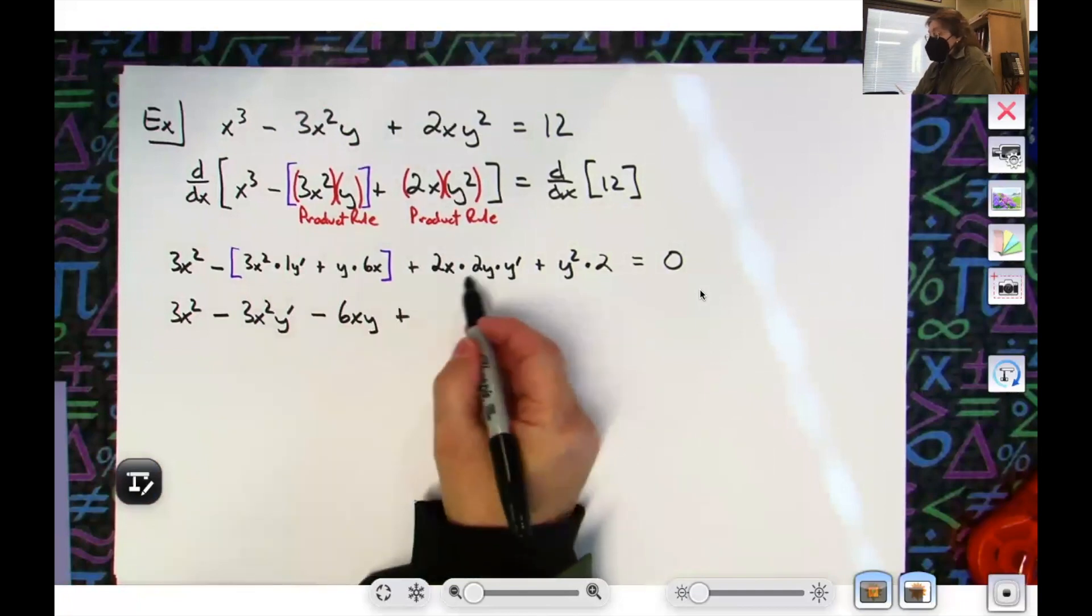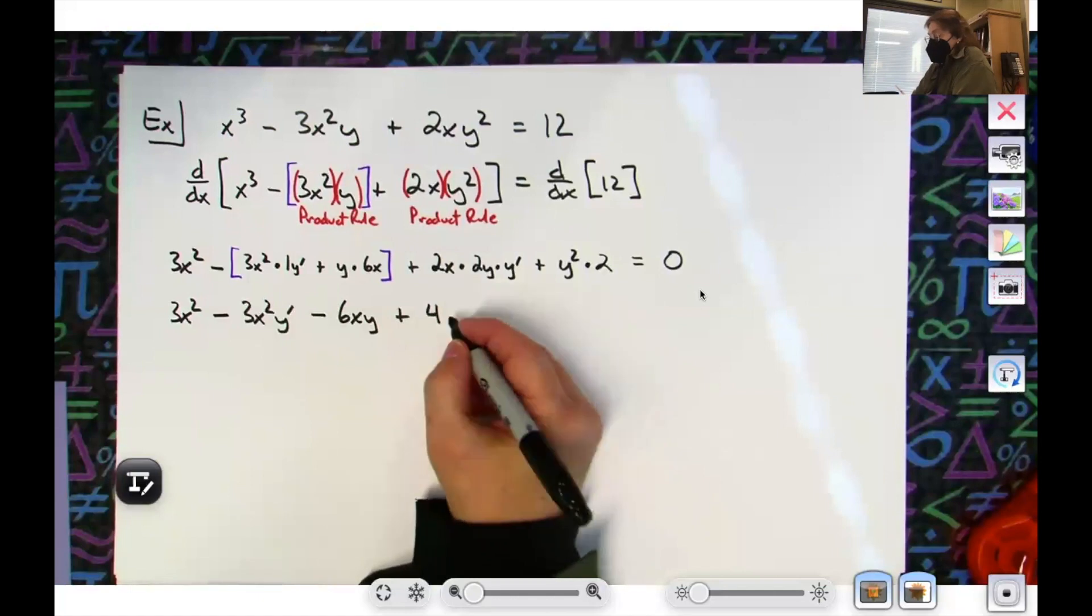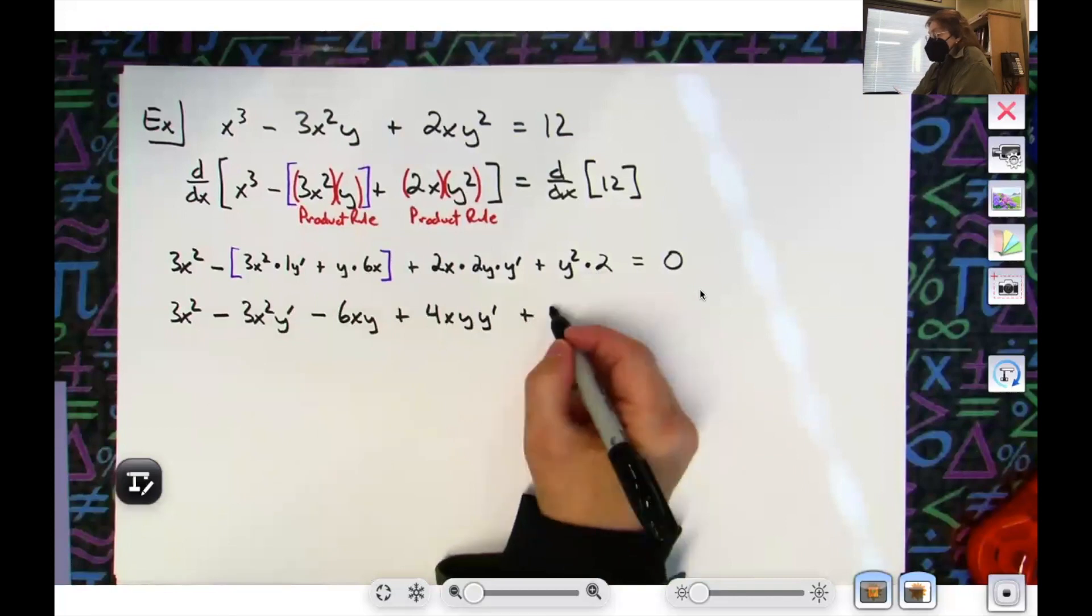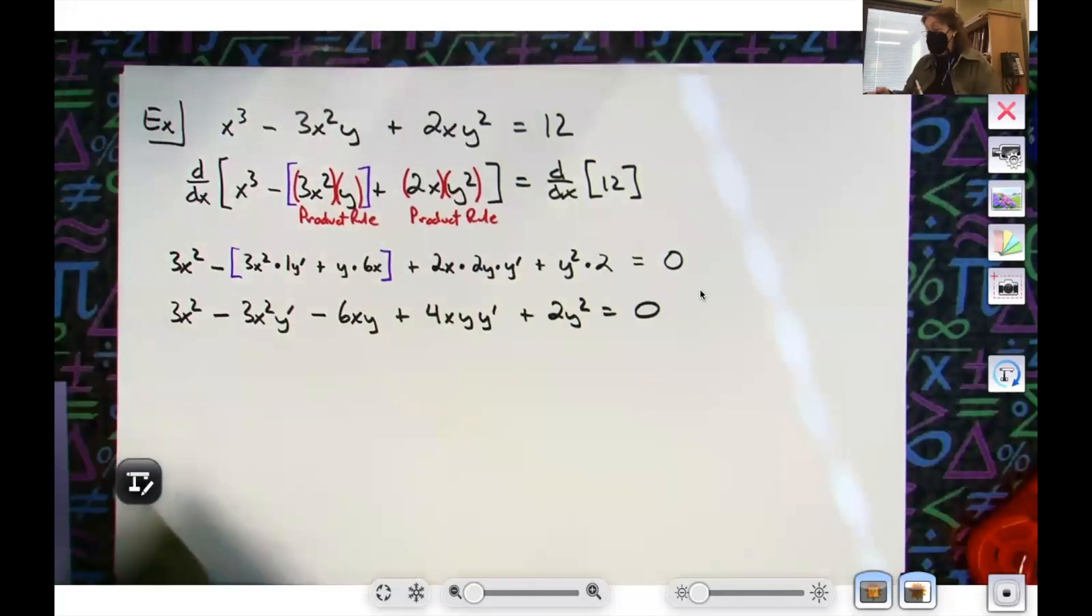This term right here, I've got 2, 2, 2, right? 2 times 2, so I'm going to pull a 4 out in front, I'm going to put them in alphabetical order, xy, and I always put the y primes at the end. I'm going to clean this term up into a 2y². Okay, then again, all right.